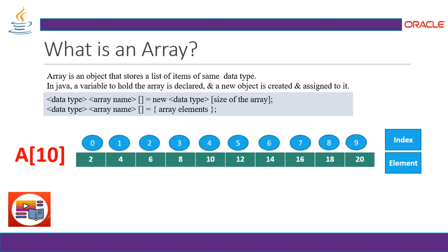Let's start with what is an array. Java provides a data structure — the array — which stores a fixed-size sequential collection of elements of the same type. This kind of data structure, which stores a collection of data of the same type, is also considered as a variable. So, an array is an object that stores a list of items of the same data type.